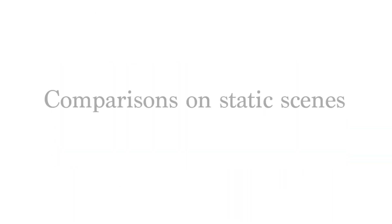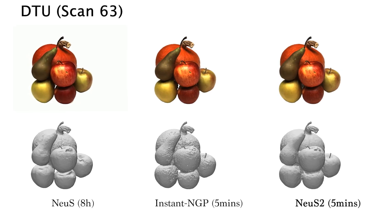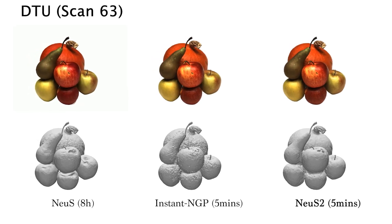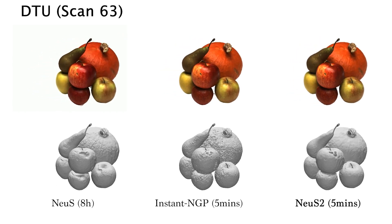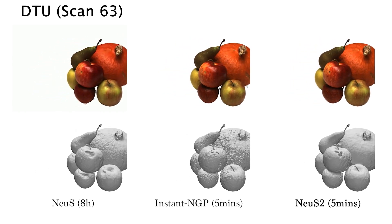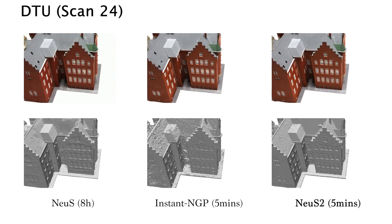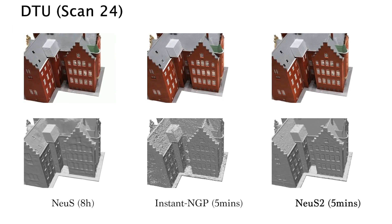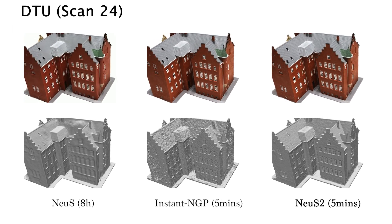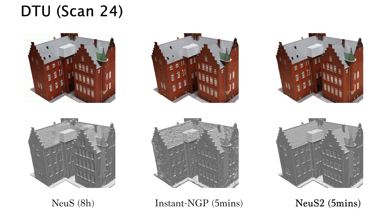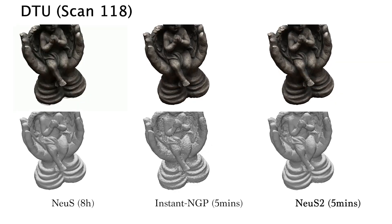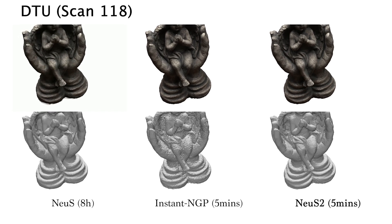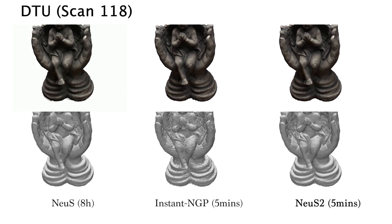Here we show more results. For the static scene reconstruction, we compare NuS2 with NuS and Instant NGP. As you can see, NuS exhibits limited performance in terms of reconstructed details, and the extracted meshes of Instant NGP's results are noisy. In contrast, NuS2 achieves high-quality geometry and appearance reconstruction with fine-grained details.